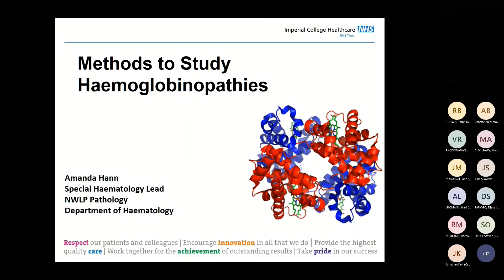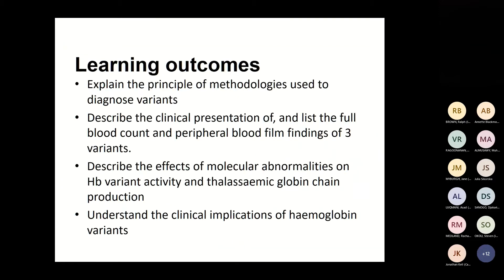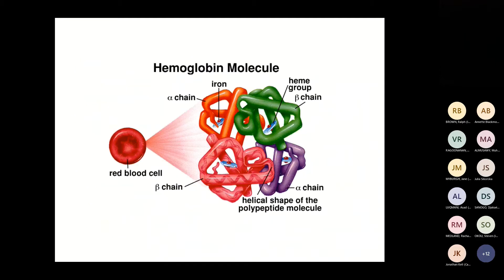These are the methods used to study haemoglobinopathies in the laboratory. From this, you'll hopefully get the principles of the methods we're going to be using, the different variants and presentations, some of the molecular abnormalities we may see, and the implications of having a haemoglobin variant. Haemoglobin is the protein of the erythrocytes.